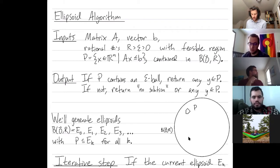So what's our output? If the feasible region where A is at most B contains an epsilon ball, you return a point to the feasible region. That's your goal. If not, if you don't contain an epsilon ball, you return no solution.